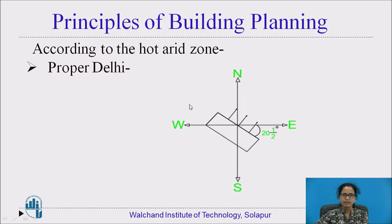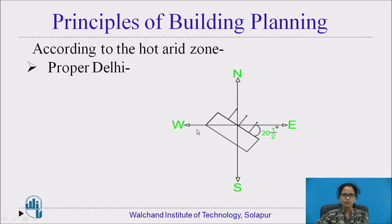In Delhi, you can see that when the longer side of the building is exactly making an angle of 20.5 degrees with the east-west line, the orientation should be towards the north-east direction, which is used to reduce the solar heat gain. The orientation should be along the south-east and north-west direction.